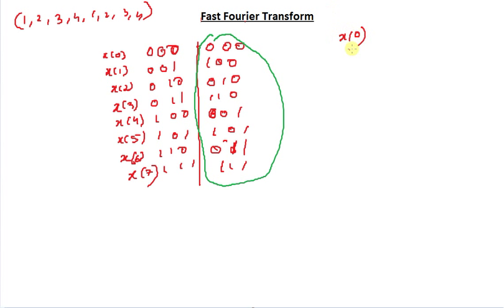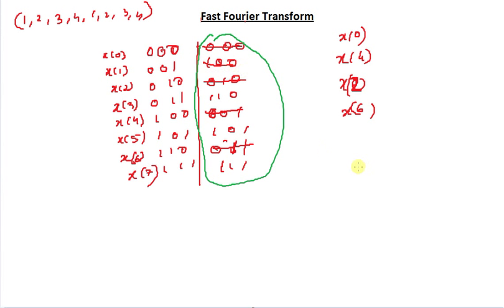Arranging the input in ascending order of the bit-reversed indices: x[0], x[4], x[2], x[6], x[1], x[5], x[3], x[7]. This is the order in which I need to arrange my input. It's called decimation in time because I've taken the signal in the time domain and divided it into chunks, separated them, and mixed them together.